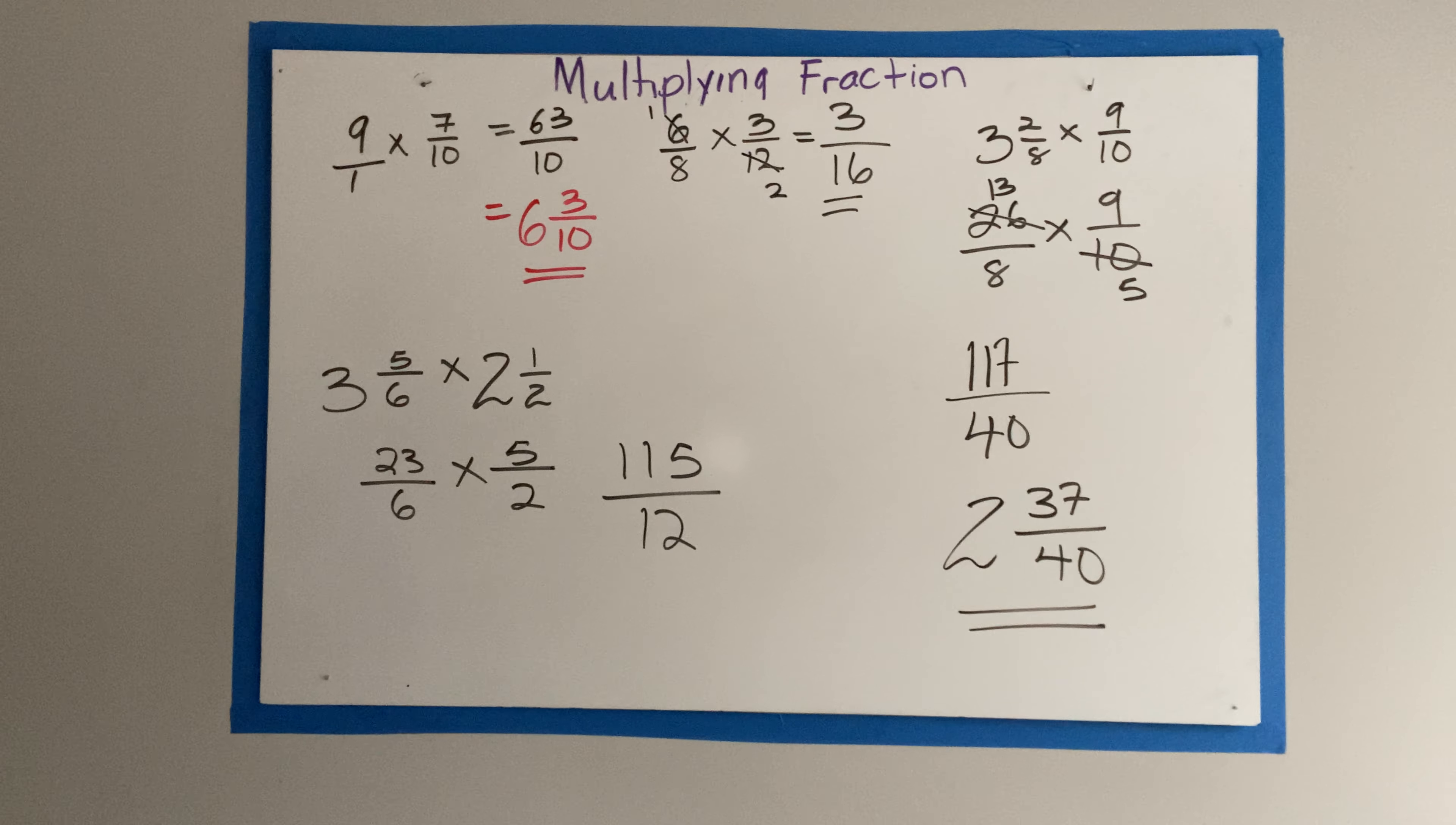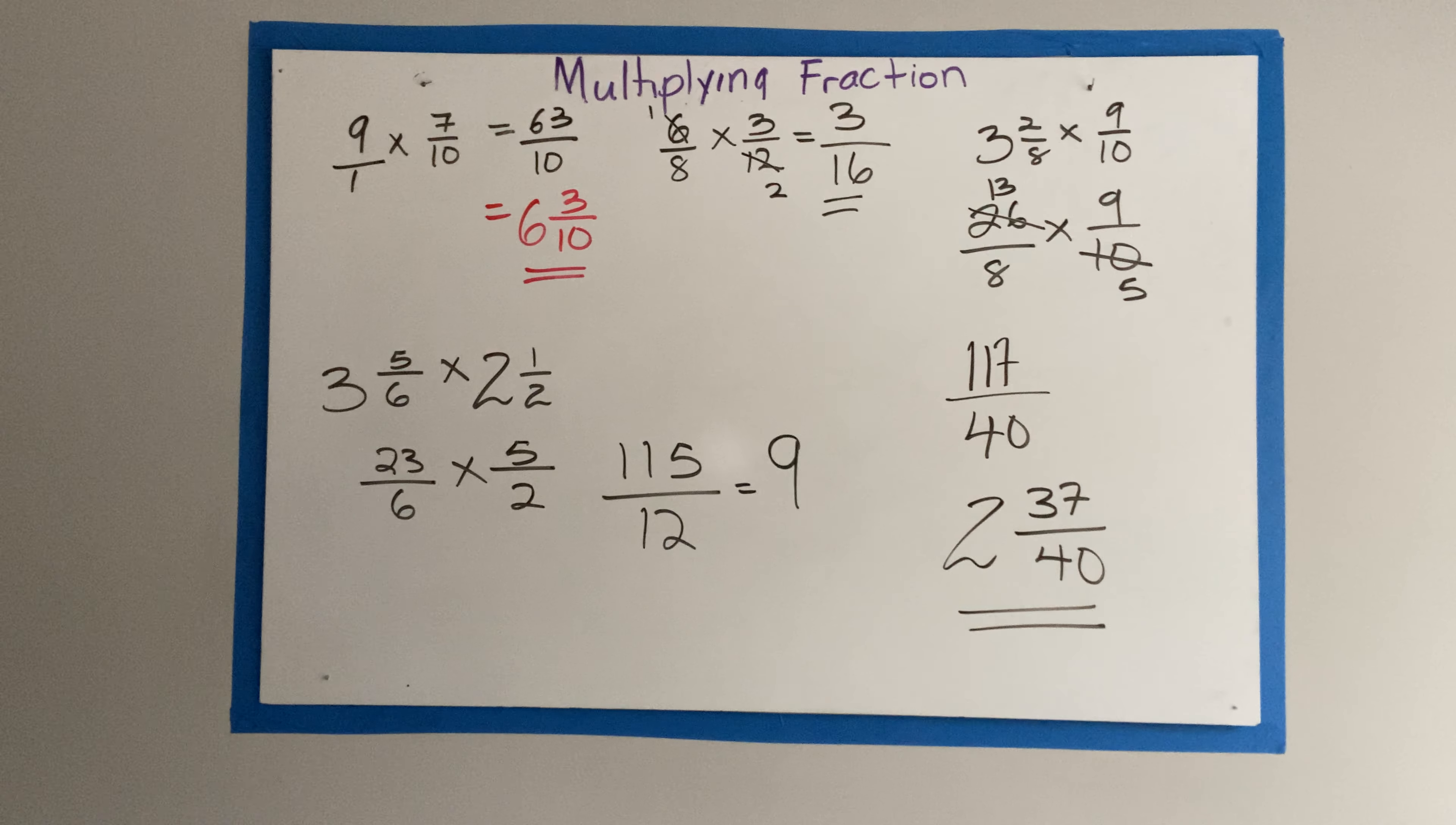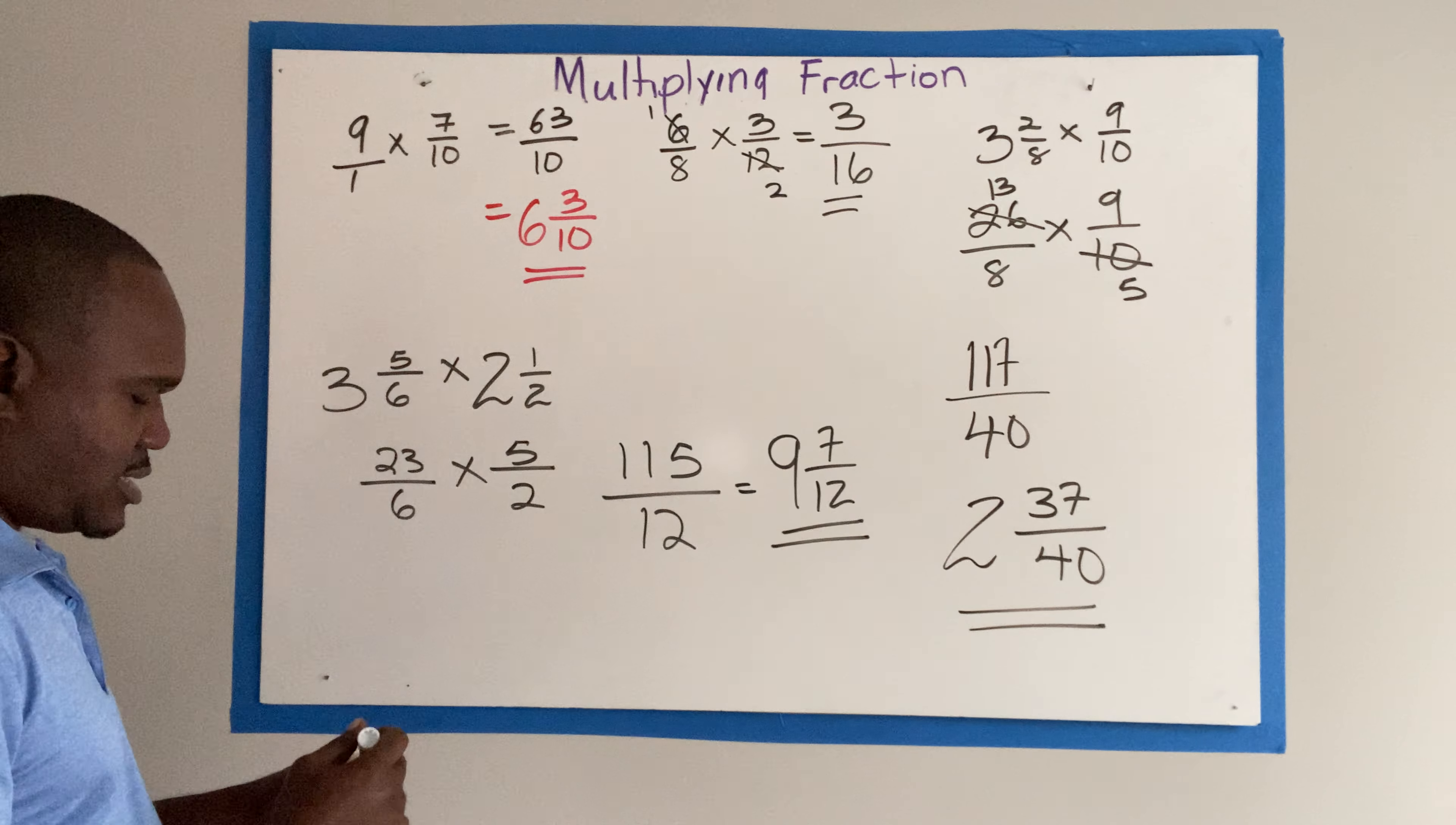And if your answer is 9 times, then you are correct. So 9 whole number. And how much remainder? Remainder is 7 over 12. And that's our final answer.